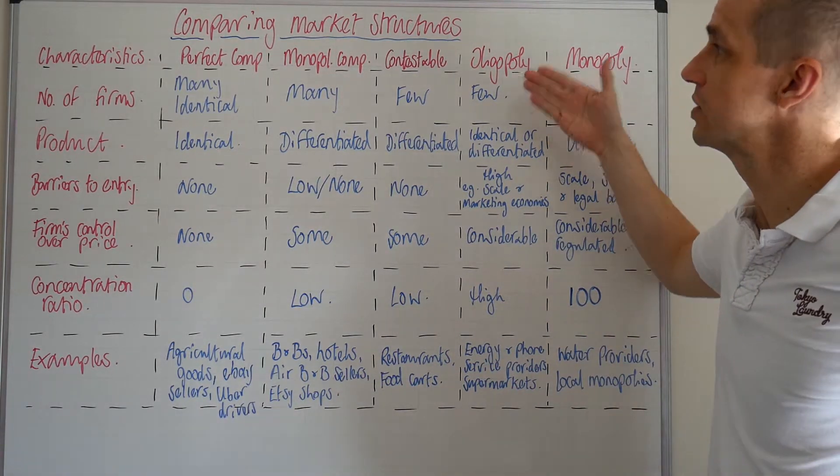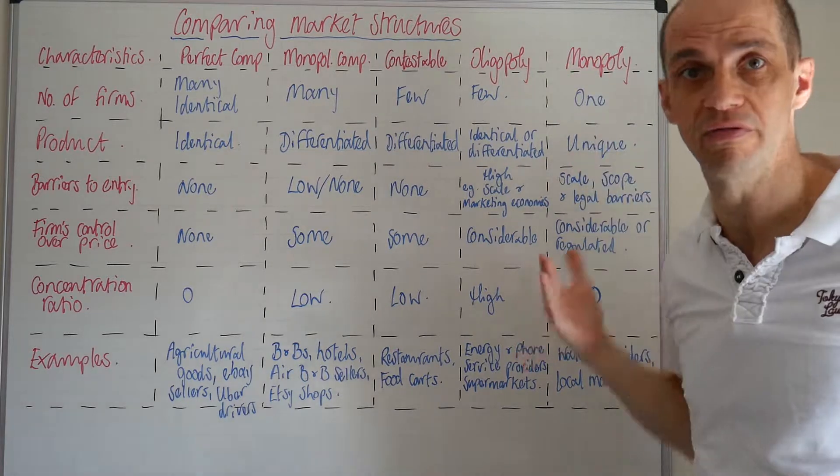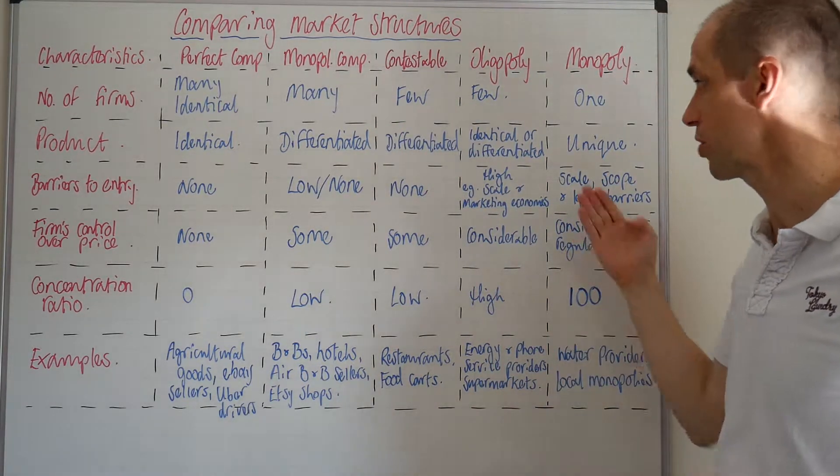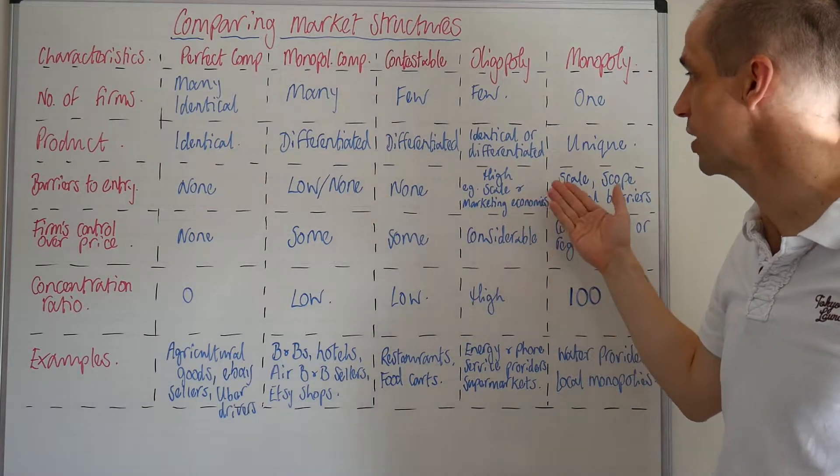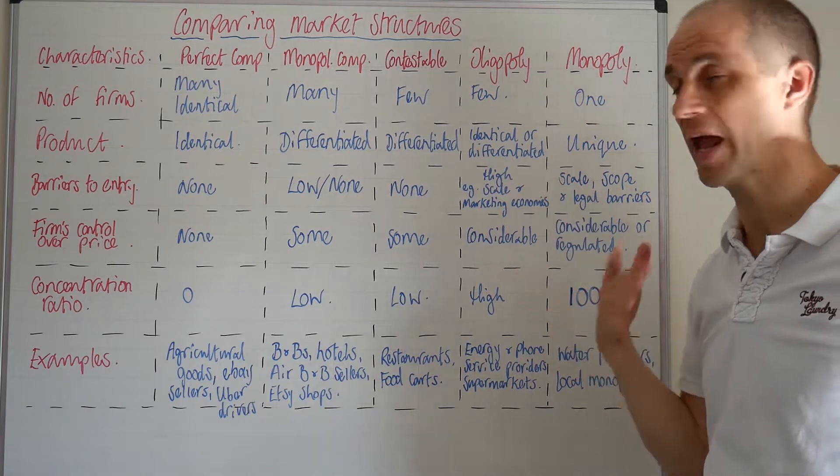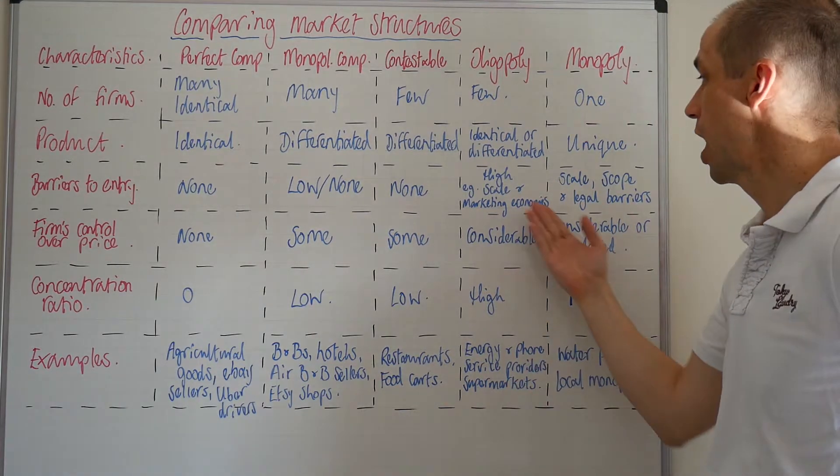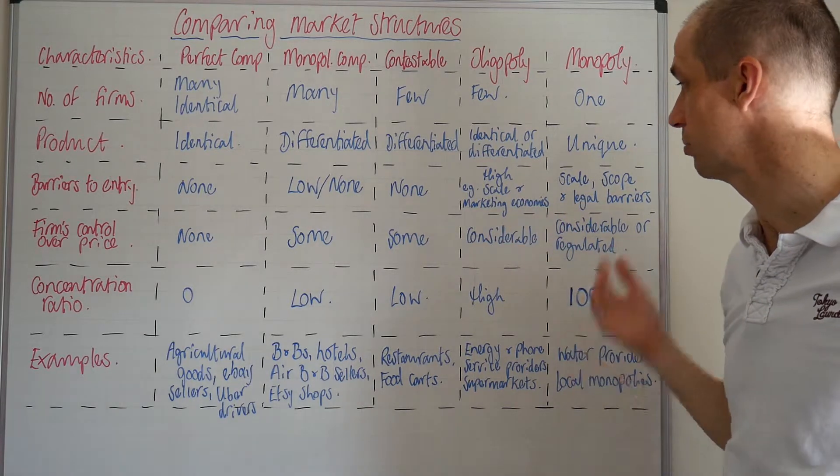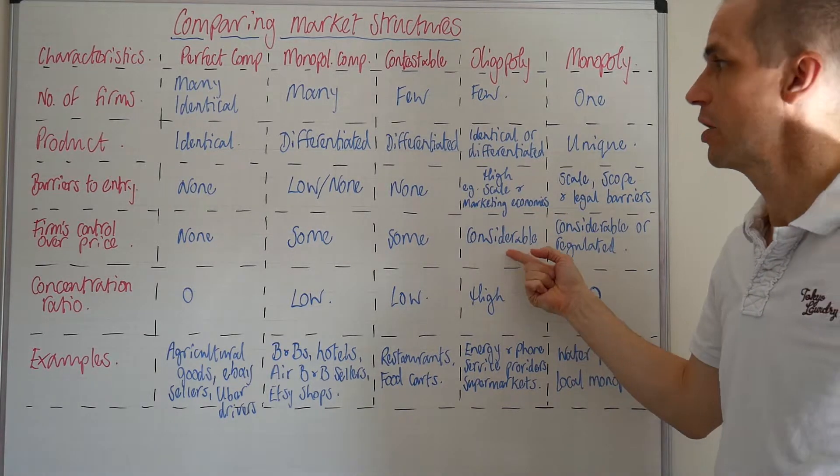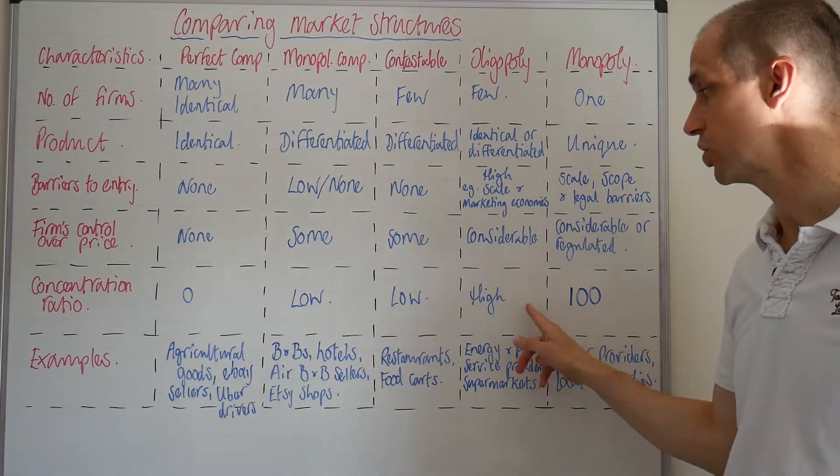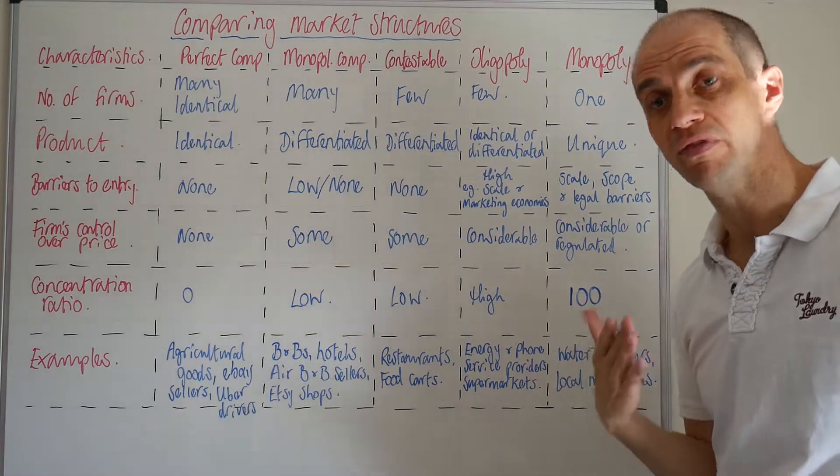When it comes to oligopolies, the number of firms is very few. You've got identical or differentiated products. Their barriers to entry are very high and are likely to include economies of scale and the cost base that the firms can actually work to, as well as the marketing economies of scale. The firm's control over price is really quite considerable. The concentration ratio is very high.